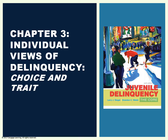Specifically in chapter three, we're going to talk about choice and trait. Inside choice and trait, there are going to be some psychological theories and some bio-social theories. Think of it this way: in individual views, there are two umbrellas of why things happen. One is called choice theory and the other one is called trait theory, and under choice and trait there are certain ideas that split off from that.